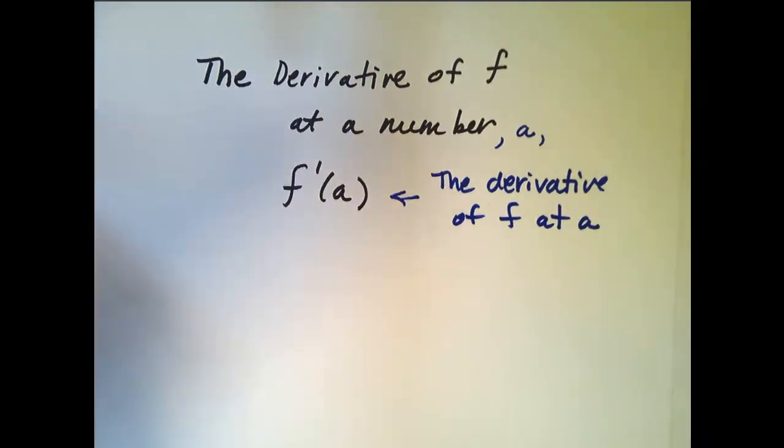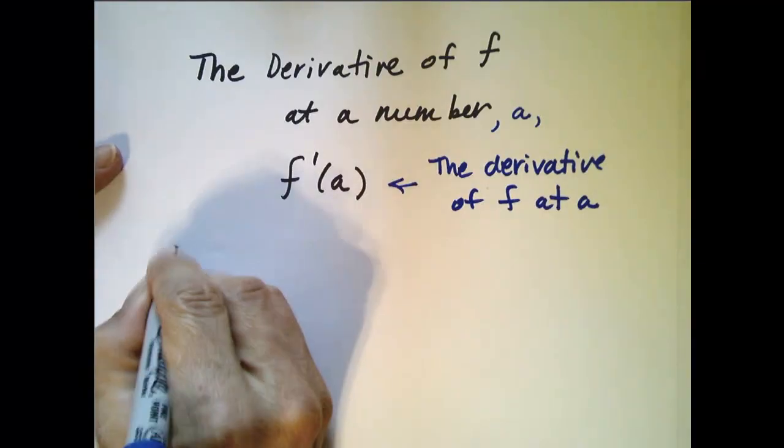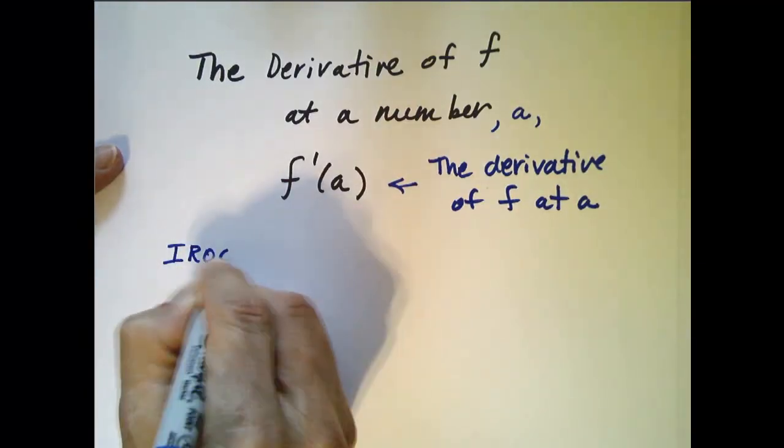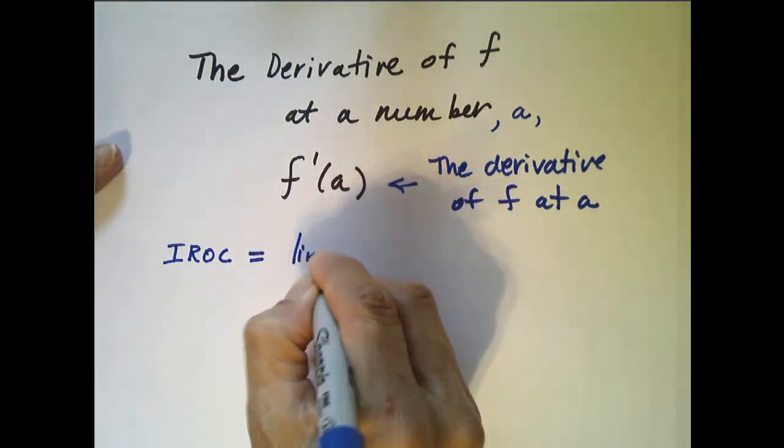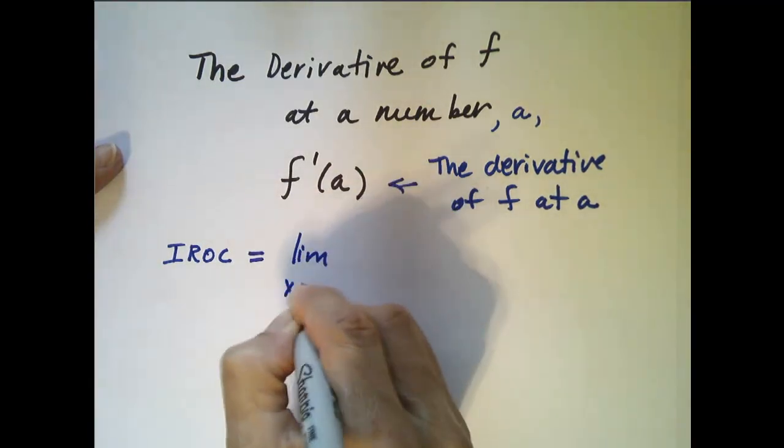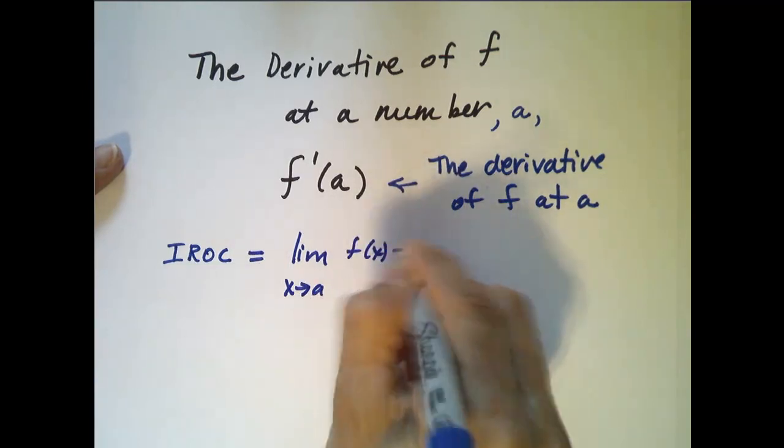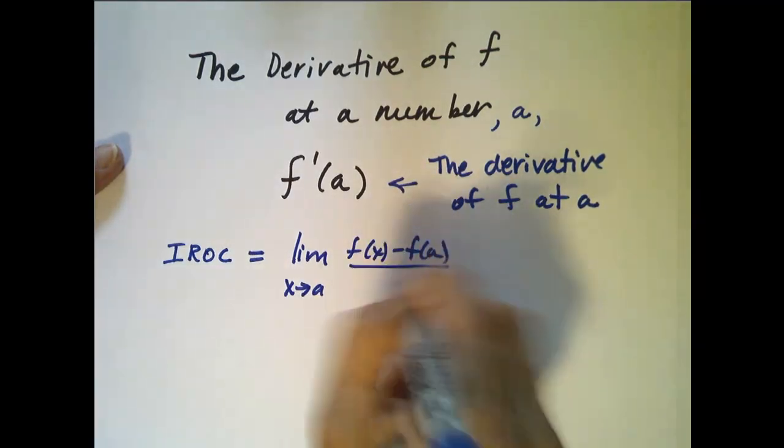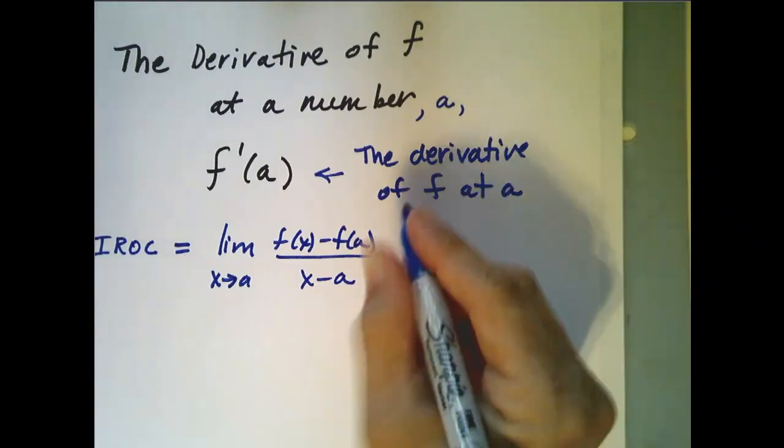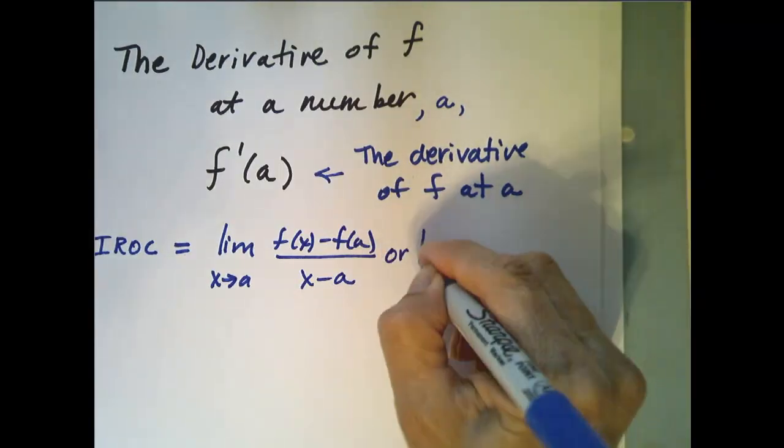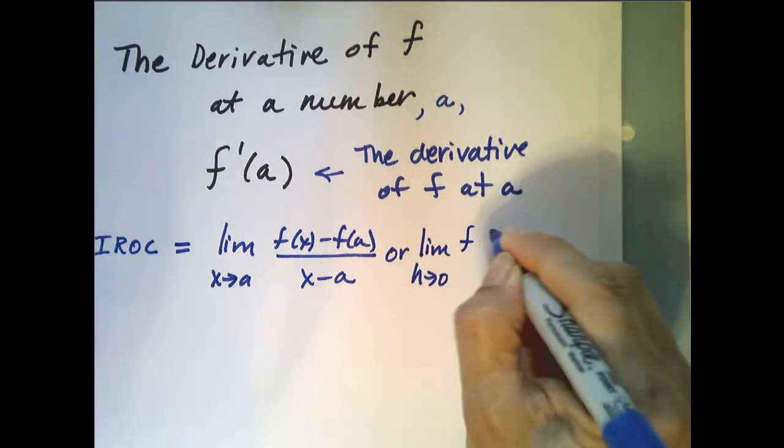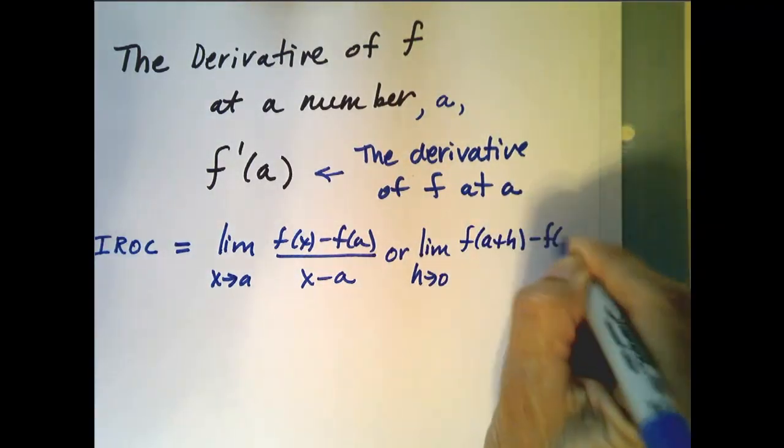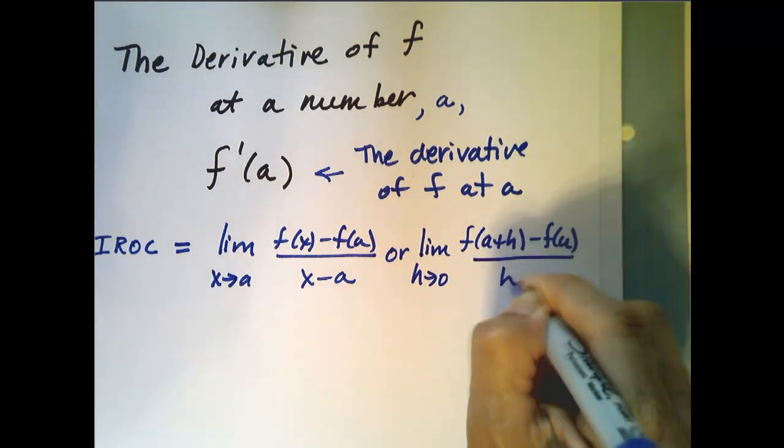So all this discussion we've had about instantaneous rate of change, which if you recall, the instantaneous rate of change of a function f is equal to the limit as x goes to a, f of x minus f of a, all over x minus a, or equivalently can be written as the limit as h goes to zero, of f of a plus h minus f of a, all over h.